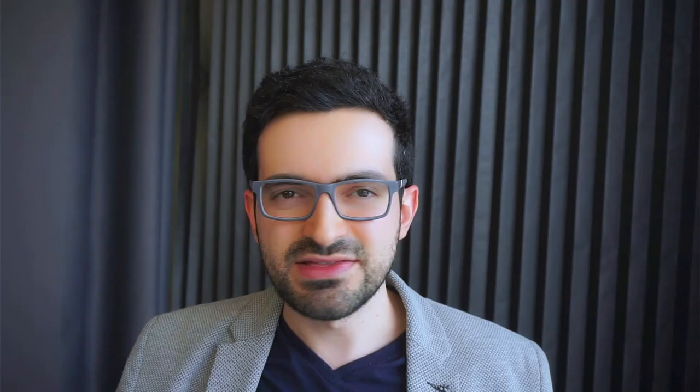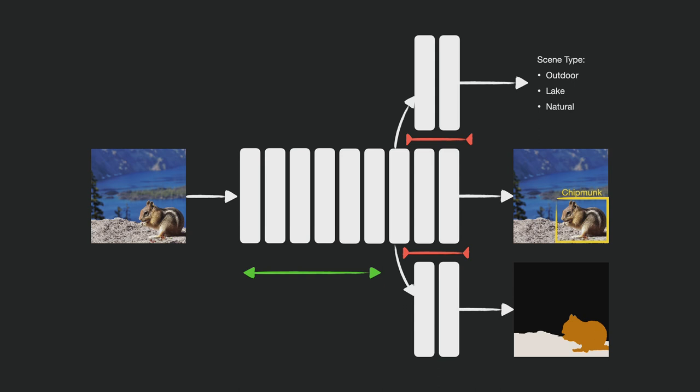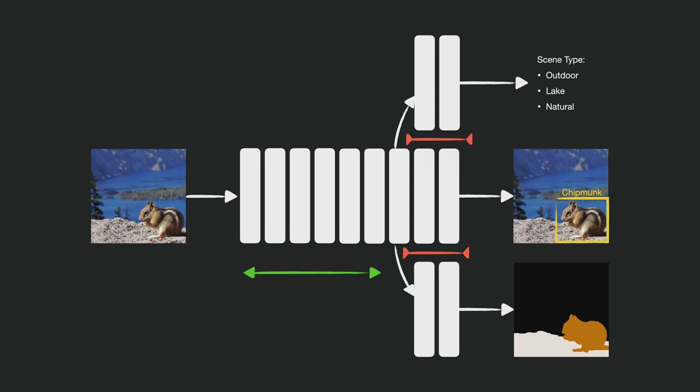So how can we do that from a model architecture perspective? Perhaps the simplest thing we could do would be to use a shared backbone followed by multiple heads, each dedicated to one task. There are many architectural considerations here: how much capacity to allocate to the shared backbone, how big the heads should be, where the heads should branch off, and so on. When we allocate more capacity to the shared part and less to the non-shared part, the tasks are forced to share more features, and therefore become more tightly coupled.